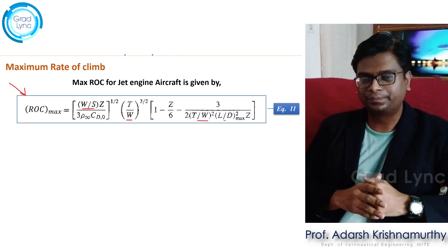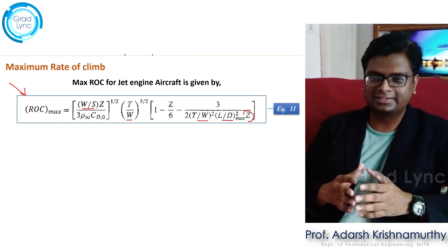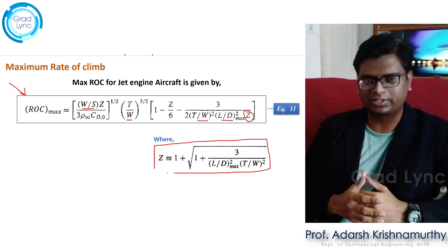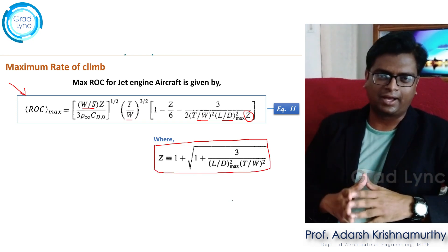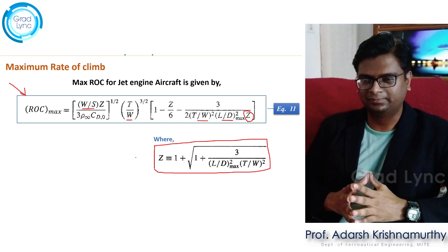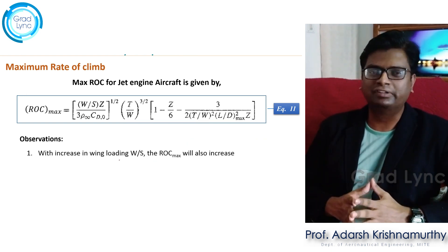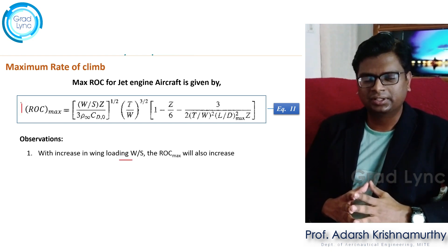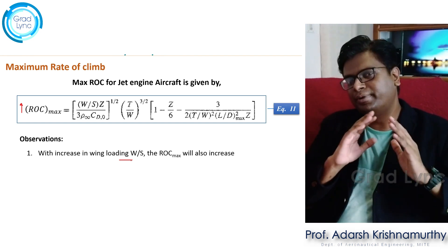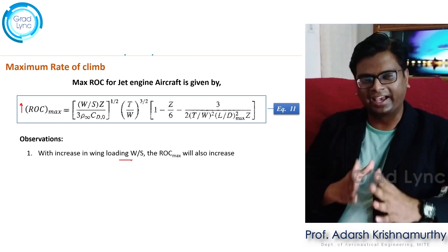I have introduced Z to simplify the equation, where Z equals 1 plus the square root of 1 plus 3 divided by (L/D_max)² times (thrust-to-weight ratio)². This entire term is simplified and written as Z. Let's call this equation number 11. First observation: if I increase the wing loading — that is, the gross weight of the aircraft divided by the planform area — the maximum rate of climb will also increase, meaning reducing the planform area relative to weight increases maximum rate of climb.